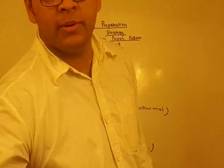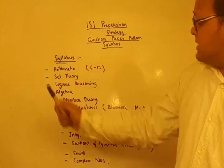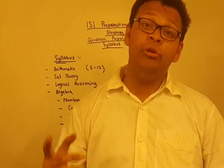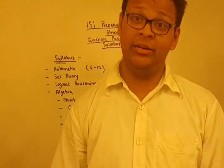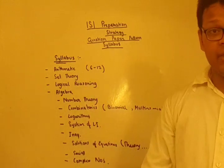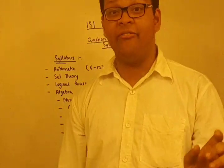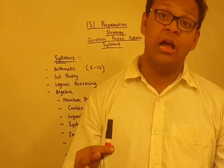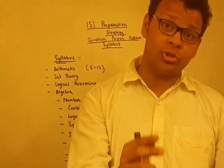To summarize the first part of the syllabus: arithmetic from class 6 to 12 — even unitary method, time and work, and ratio-proportion questions appear in ISI and in the TOMATO book. Set theory requires clear, basic concepts — not abstract theory, but very clear-cut understanding. For logical reasoning, you will get riddles and puzzles which are interesting to solve. These questions are usually not that hard, so I recommend you aim to score full marks in logical reasoning.